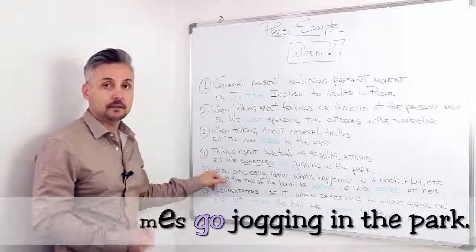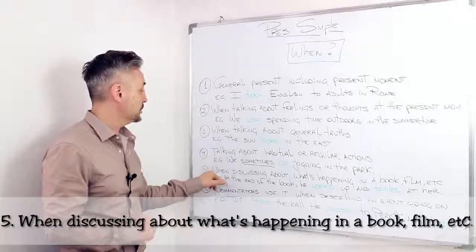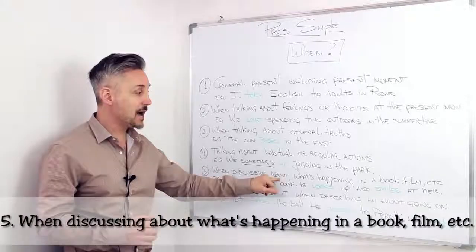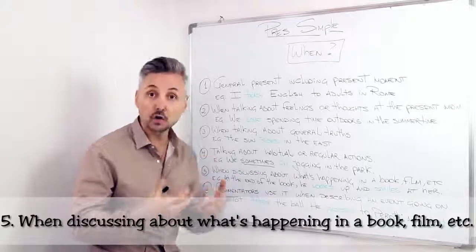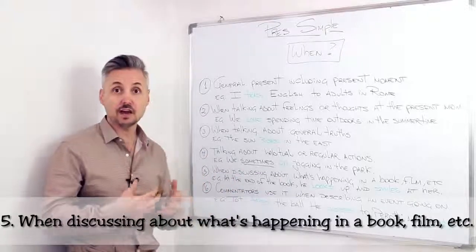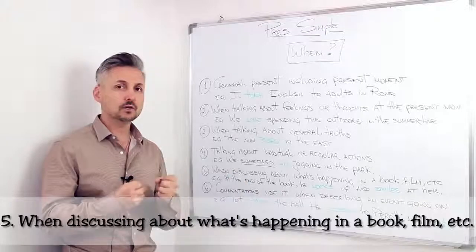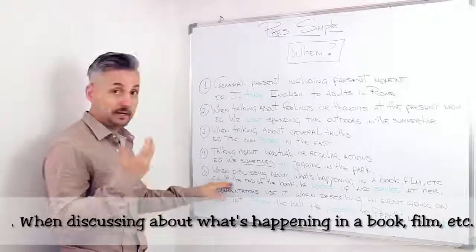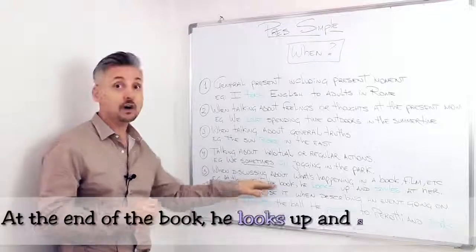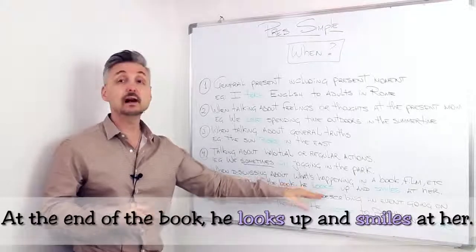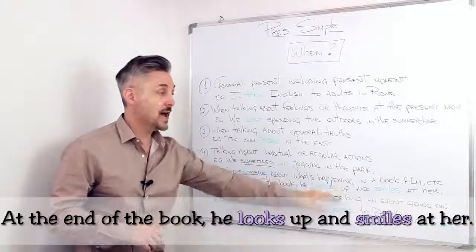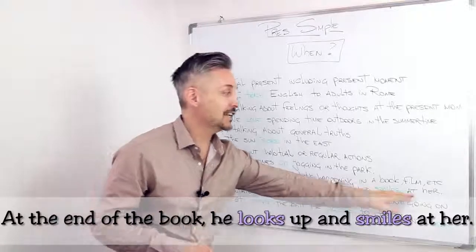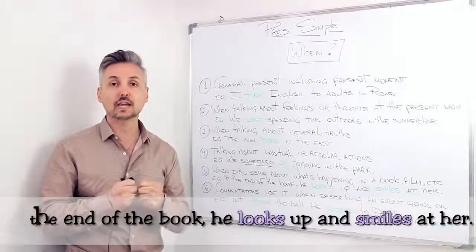Now, the fifth situation, when discussing about what's happening in a book, a film, etc. This is used when you want to make the story vivid. So, for example, at the end of the book, he looks up, and smiles at her, to make the story vivid.